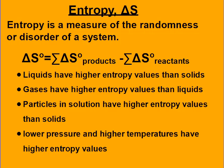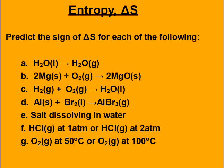This is due to them having more dispersal or having more microstates — there are more possibilities of where they're at at any given moment in time. If a system has more disorder, that's a positive delta S.